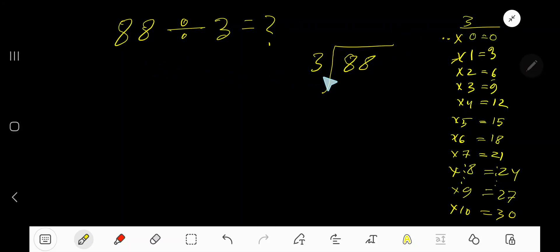88 divided by 3. Here 3 is a divisor, so we need the multiplication table of 3. 3 times 0 is 0, 3 times 1 is 3, 3 times 2 is 6, 3 times 3 is 9, 3 times 4 is 12, 3 times 5 is 15, 3 times 6 is 18, 3 times 7 is 21.